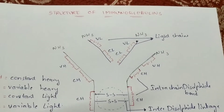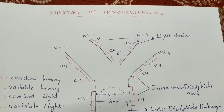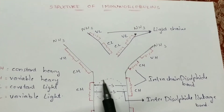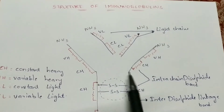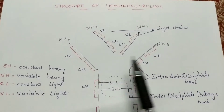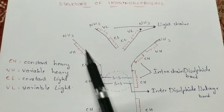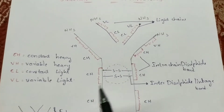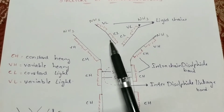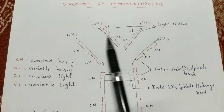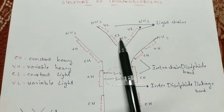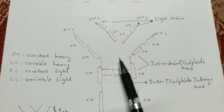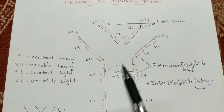Hi friends, my name is Farindra. In this video I am going to explain about the structure of immunoglobulins. Normally these immunoglobulins are known as tetramers. Why are they named tetramers? Because they consist of two heavy chains and two light chains. Two heavy chains plus two light chains equals four, hence these immunoglobulins are called tetramers.